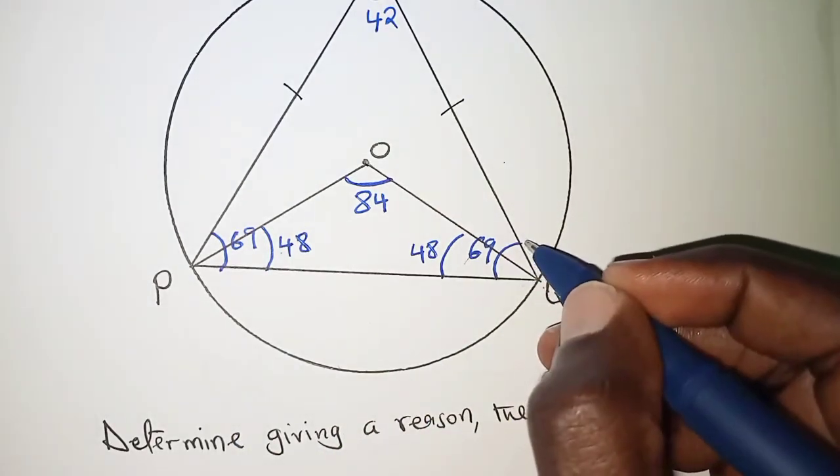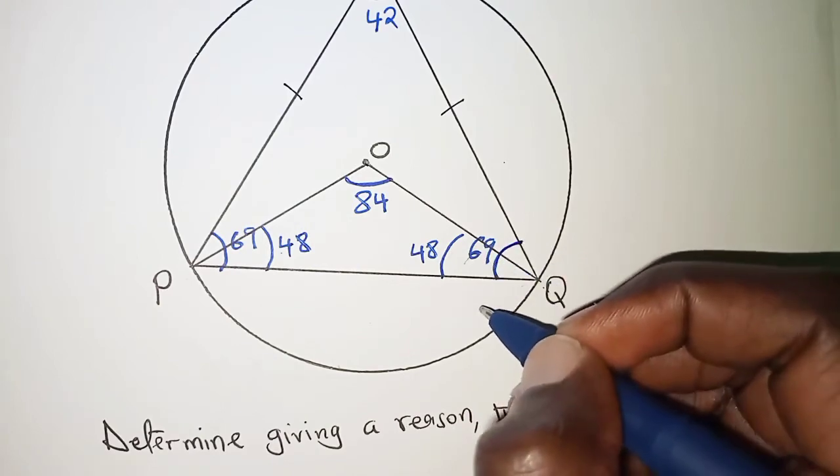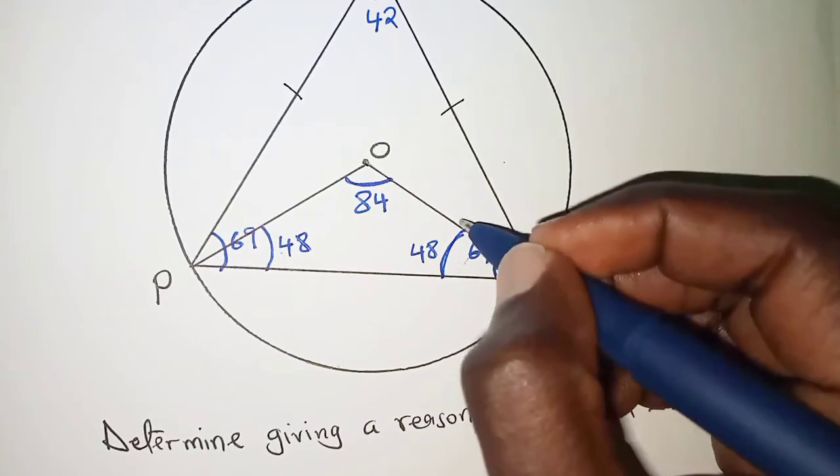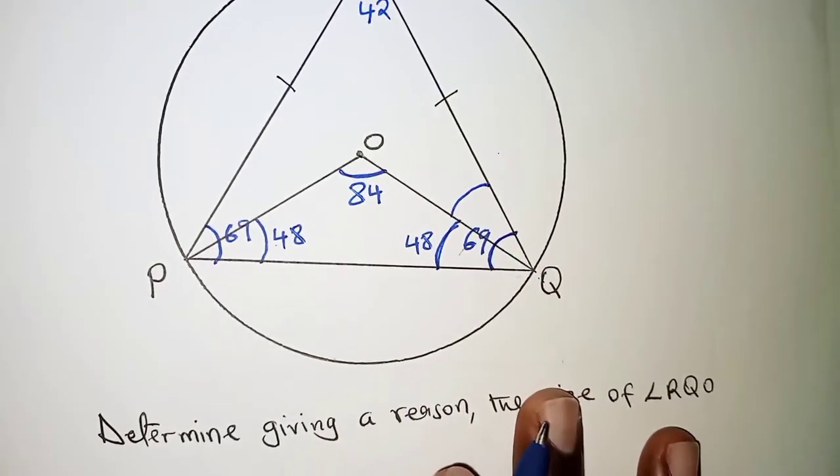From here, we also need to remember that the whole of this angle was 69, and here is already 48. So what is left here, that is what we need to determine now.